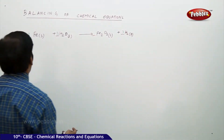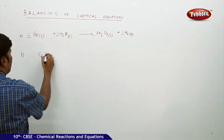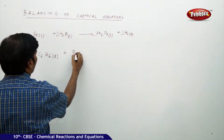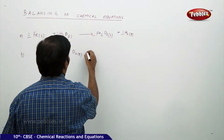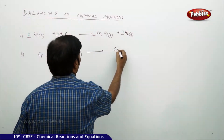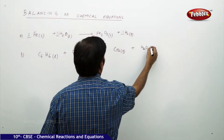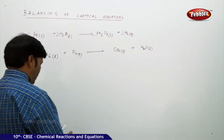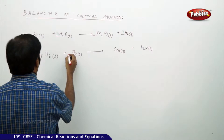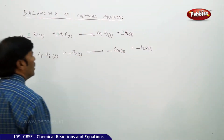Take one more example. Suppose I am taking C₆H₆ benzene liquid plus O₂ gas gives rise to CO₂ gas plus H₂O liquid. Here, just as in the earlier case, I am marking unknown molar coefficients beside each compound in the reaction.